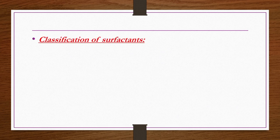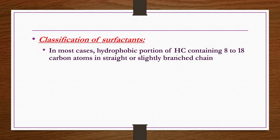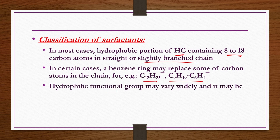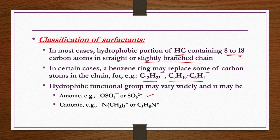In the classification of surfactants, in most cases the hydrophobic portion is a hydrocarbon chain containing 8 to 18 carbon atoms in a straight or slightly branched chain. Slightly branched chains are less biodegradable, while straight chains are easily biodegradable. In certain cases a benzene ring may replace some of the carbon atoms in the chain. The hydrophilic functional group may vary widely and may be anionic like OSO₄⁻ or SO₃²⁻, cationic like N(CH₃)₃⁺ or C₅H₅N⁺, or nonionic.